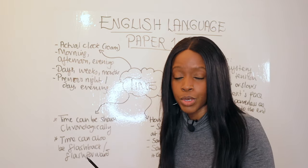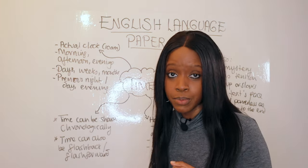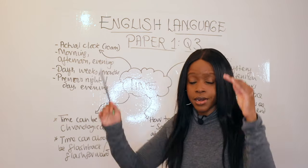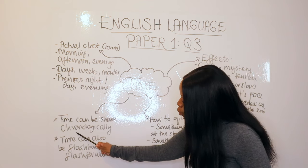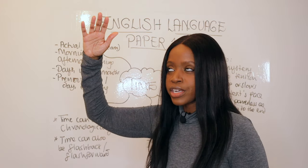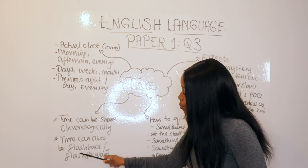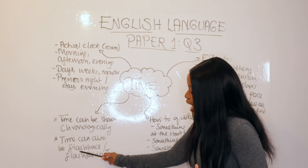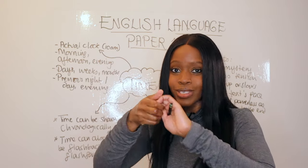Make sure that as you're reading your language paper one extract, if some of these techniques jump out at you, you recognise that time is being used as a structural feature by the author. In terms of how it could appear in the extract, figure out whether the way it's been mentioned is coming through chronologically — for example, 10 a.m., then 11 a.m., then 11:30, then midday — or whether it's being used through flashback or flash-forward. The use of flashback and flash-forward literally goes hand in hand with time being used as a structural feature.